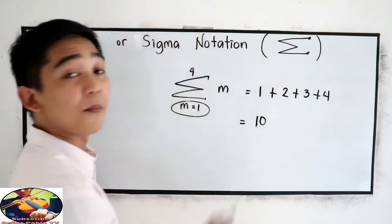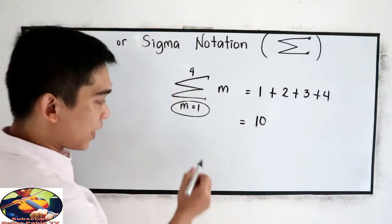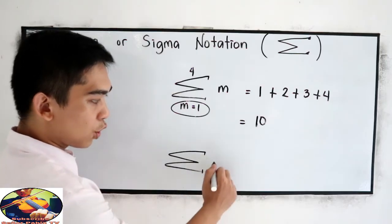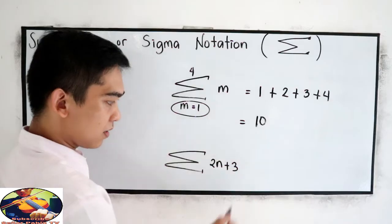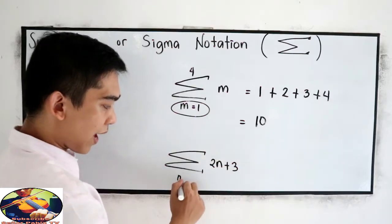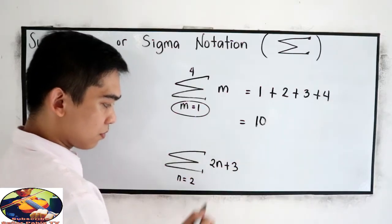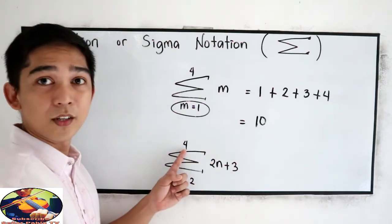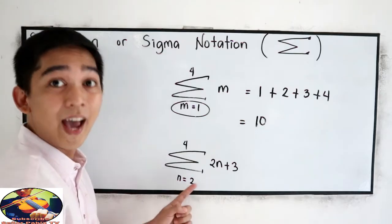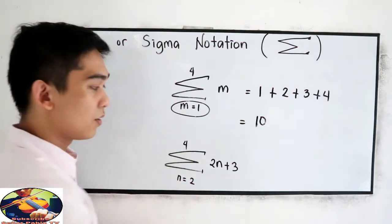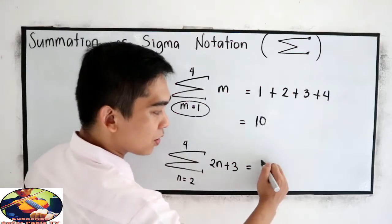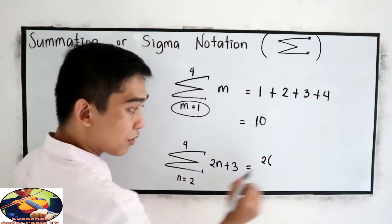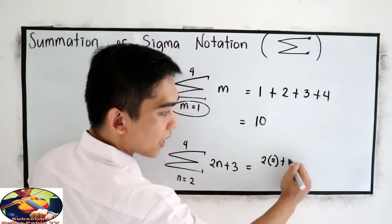Another one is summation of 2N plus 3, where N goes from 2 to 4. So we are going to start at 2 and end at 4. So we have the sum of 2 times, starting at 2, plus 3.